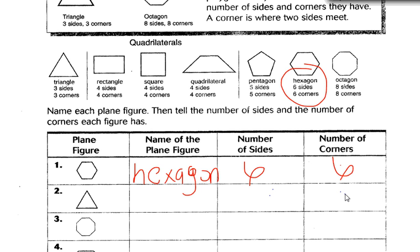How many sides does that one have? Three. And how many corners does it have? Three. So what's it called? Triangle. And then you'll do the rest for homework.